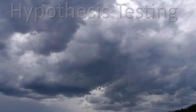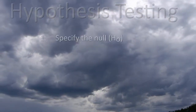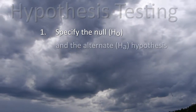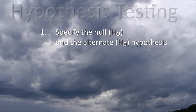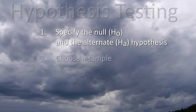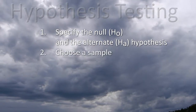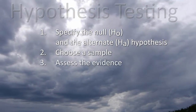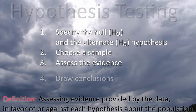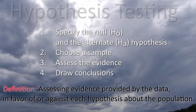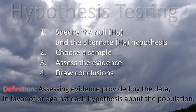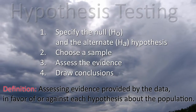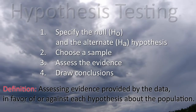Steps involved in hypothesis testing include specifying the null hypothesis and the alternate hypothesis, choosing a sample, assessing the evidence, and drawing conclusions. Statistical hypothesis testing is defined as assessing evidence provided by the data in favor of or against each hypothesis about the population.